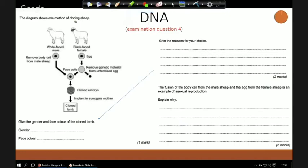Of course, for a balanced argument, think of the negatives. There might be safety concerns. Do we know all the genes that are going across? We might reduce biodiversity. Perhaps there's arguments that we shouldn't play God. The diagram shows a method of cloning sheep. We've got a white-faced male, a black-faced female. We've got a body cell removed from the male sheep. We've got an egg. There's a fusion process. We've got a clone and we've got a clone lamb. Give the gender and face color of the clone lamb. The second mark here, give our reason. And then finally, the fusion of the body cell came from a male sheep and the egg from a female sheep as an example of asexual. Why?